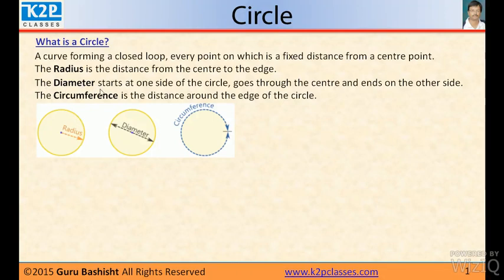The diameter is just double of radius or you can define the diameter starts at one point of the circle, goes through the center and ends on the other side. It always passes through center of the circle and this distance is called diameter and diameter is always double of radius.